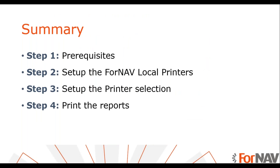So let's recap what we just did. We first set up the printers in the Fornav local printer setup. We defined all relevant printer settings like paper kind, etc. After we did this, we could use the printers in the printer selection. When we printed, we got a Fornav local print file that we could open automatically.